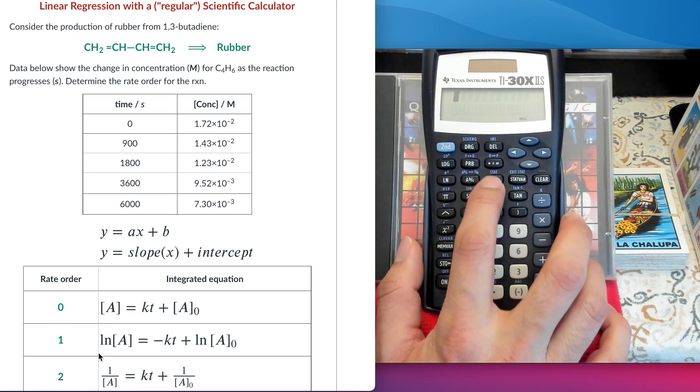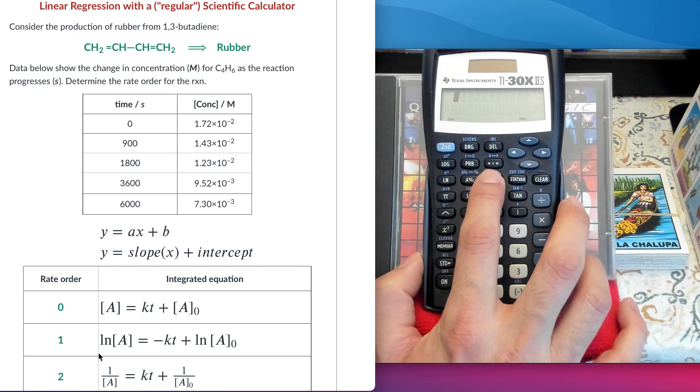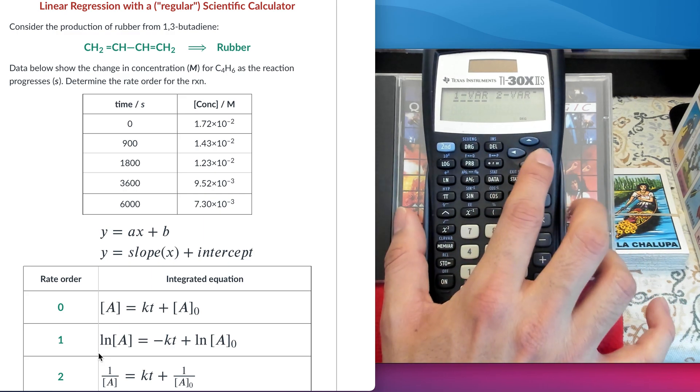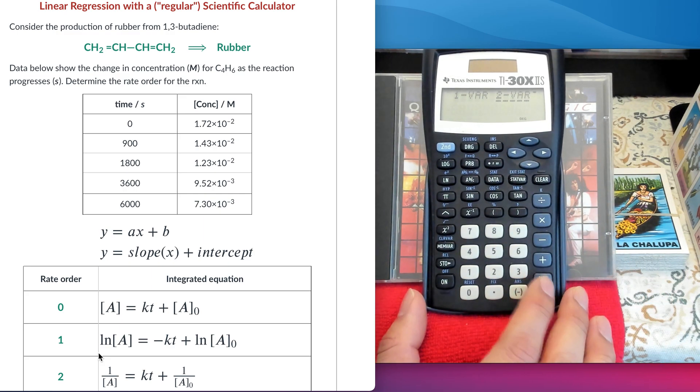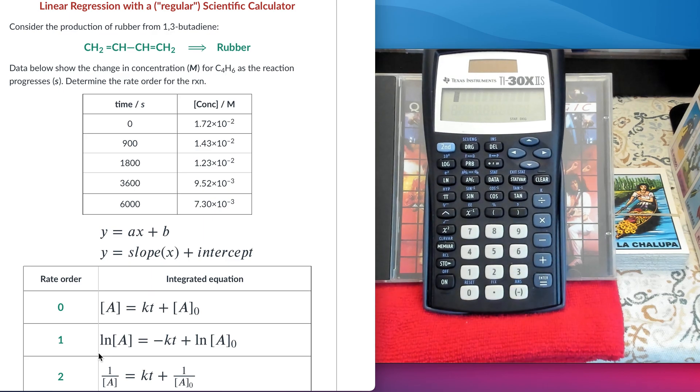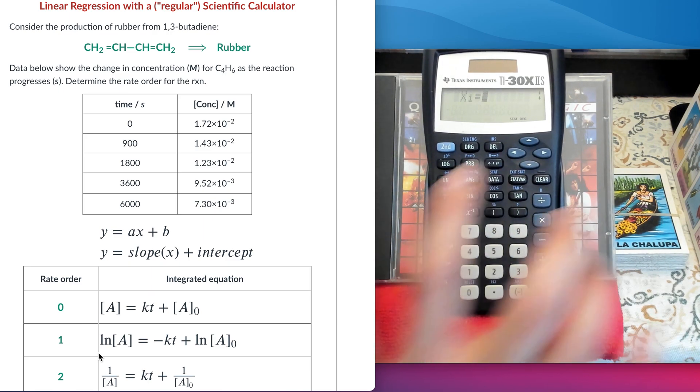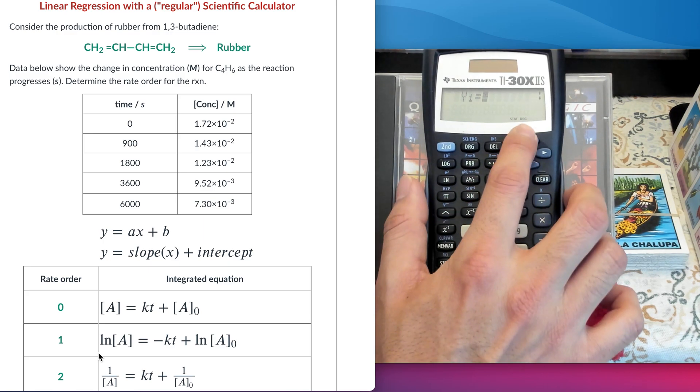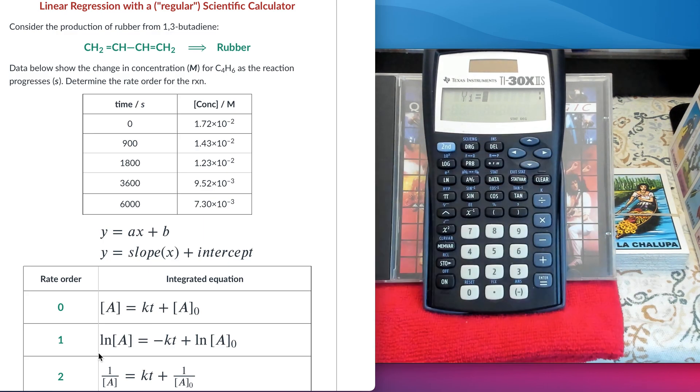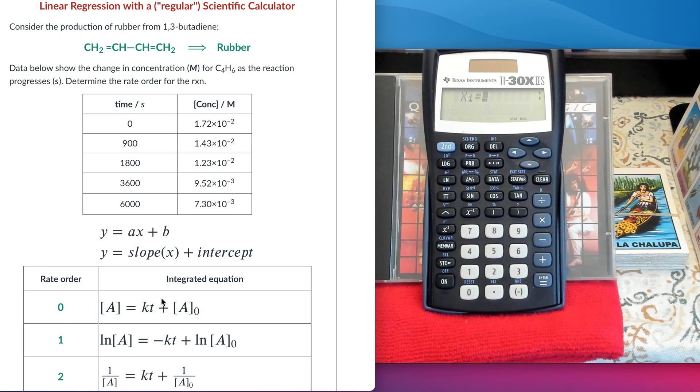Let's go to statistics mode. So, second function, statistics. It's asking me one or two variables. We're going to be x, y point. So yes, I want two variables. Now, I'm going to start entering the data with this data button. You can see that it's expecting x and y first values. Let's do the first model, the straight line for the zero order. It's going to be time in the x-axis, concentration in the y-axis. I have my table. I'm going to enter zero for my x.